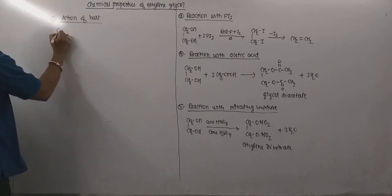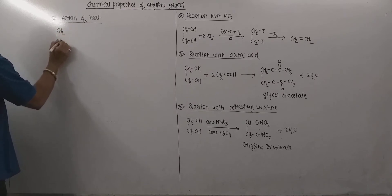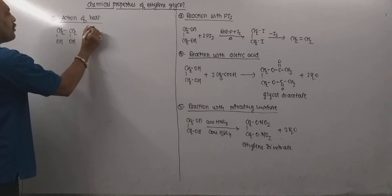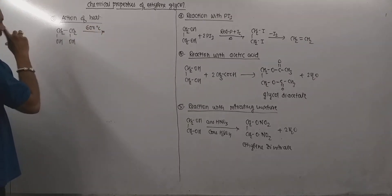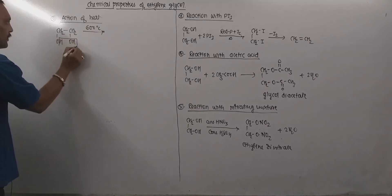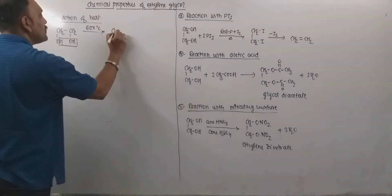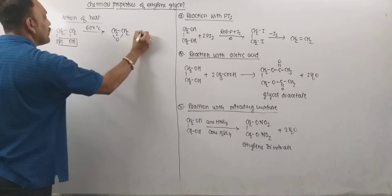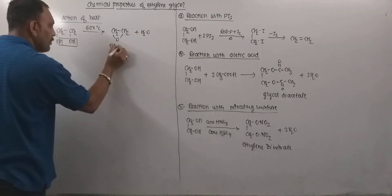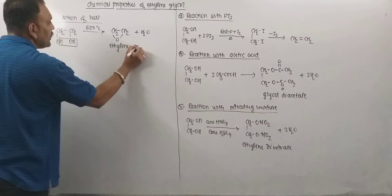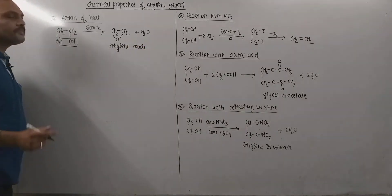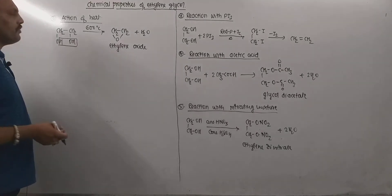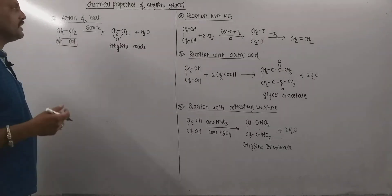The next property is the action of heat. When ethylene glycol is heated strongly at a high temperature of about 600°C, intramolecular dehydration takes place. Upon intramolecular dehydration, ethylene oxide is obtained.